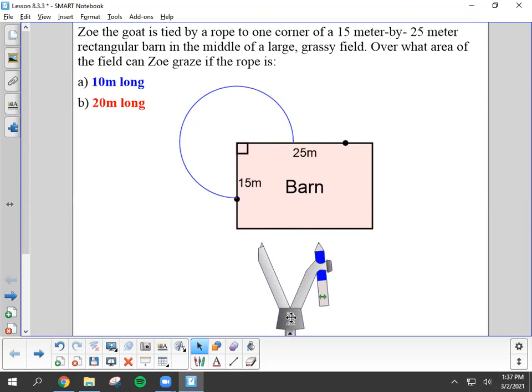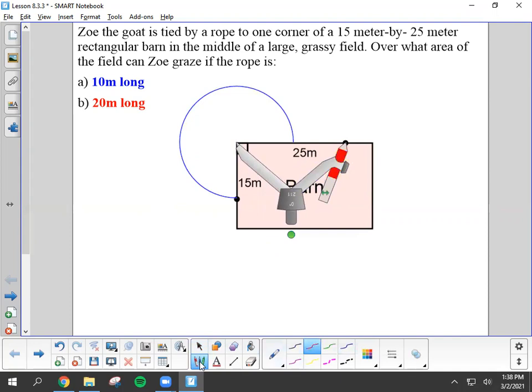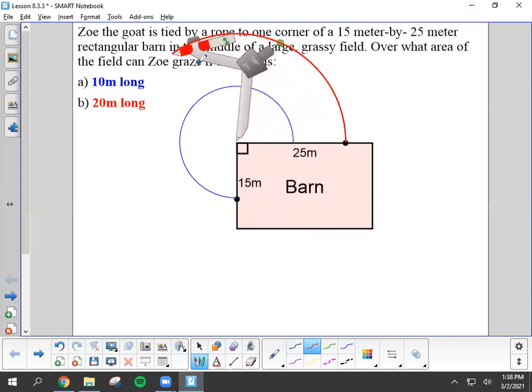Now, it gets a little more complicated when the rope is 20 meters long. So again, I'm going to put my compass point here where it was before, and now I'm going to extend my compass out a little bit to what we would see as 20 meters. So again, she can't walk through walls, but she can graze and it will end up being a circle that she's going through.